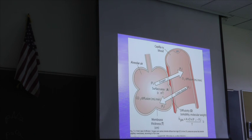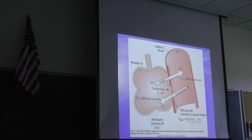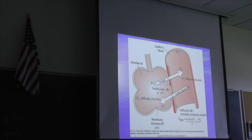Carbon dioxide is produced by the cells in the body through normal metabolism, and it needs to be eliminated. It travels back to the lungs, and when the blood is in contact with the alveolus, carbon dioxide moves from its high partial pressure in the blood to the lower partial pressure in the alveoli.